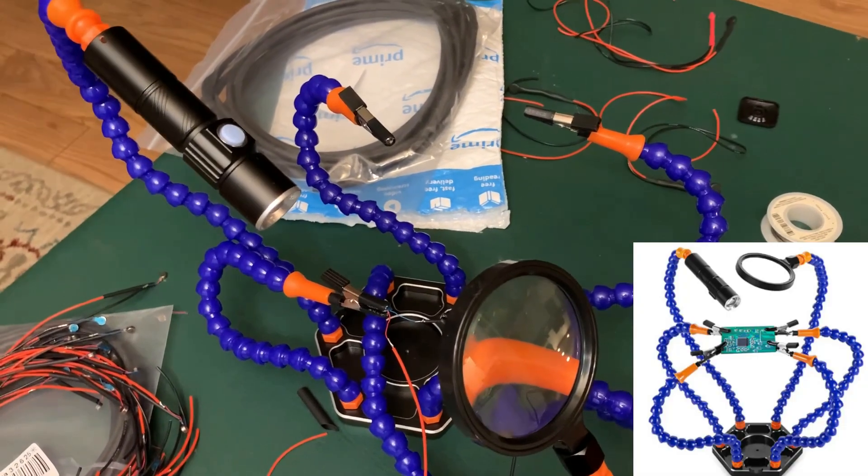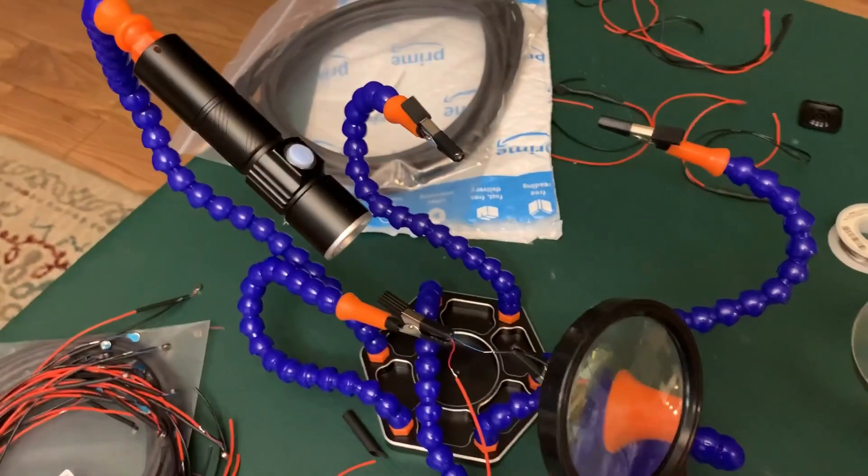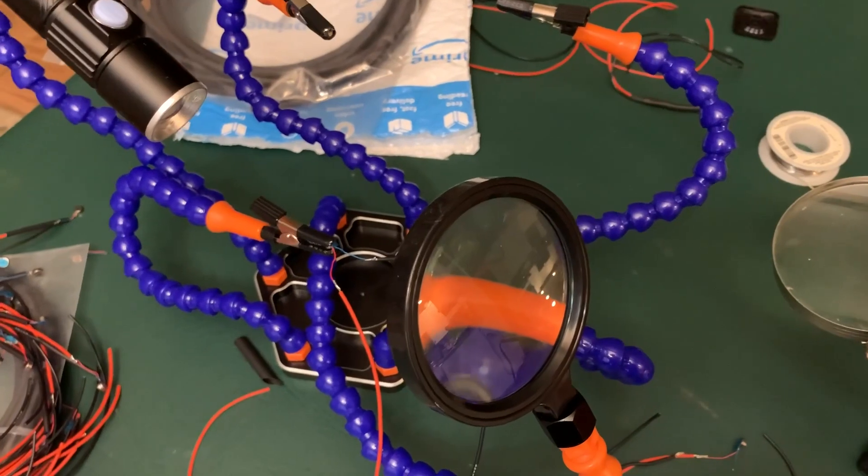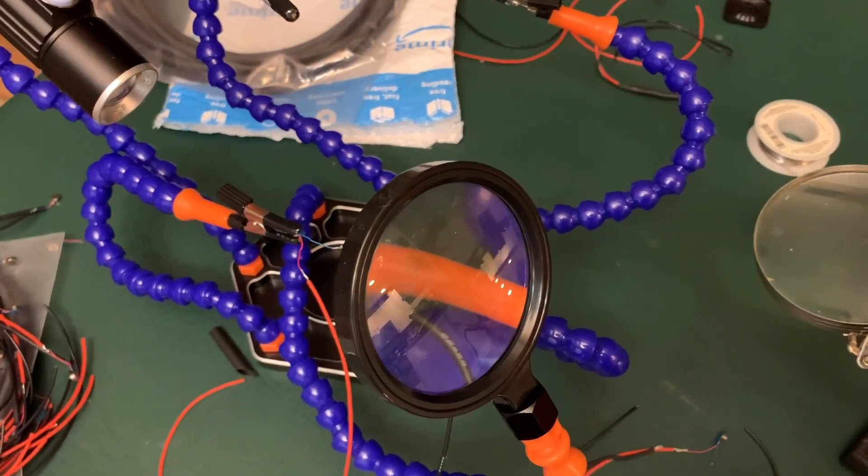I previously mentioned this helping hands for soldering. This one is from Amazon, it's got a light, it's got a magnifier, and I found it dramatically speeds up making fingers, so I'll run through the process here.